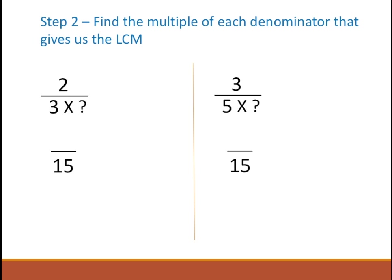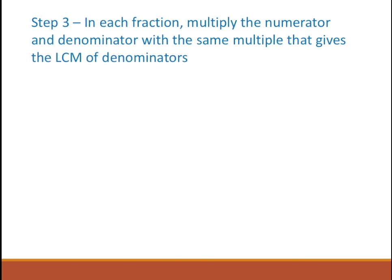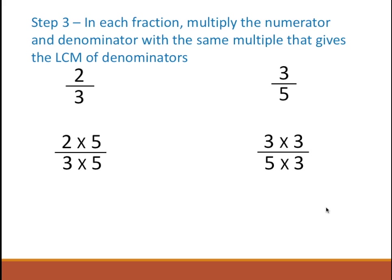We saw that 3 times 5 is 15 and 5 times 3 is 15. So the multiple for the first fraction is 5, and for the second fraction the multiple is 3. In step 3, in each fraction we multiply both the numerator and the denominator with this multiple. Going back to 2 by 3 and 3 by 5, I'm going to multiply by 5 for the first fraction because the multiple that gives me 15 is 5, and for 3 by 5 the multiple is 3.